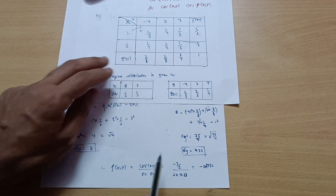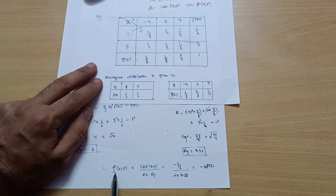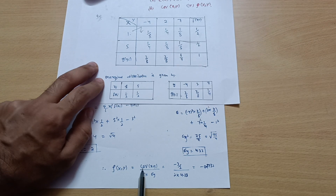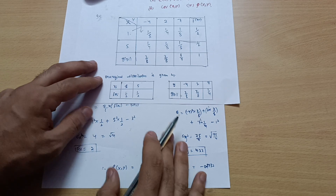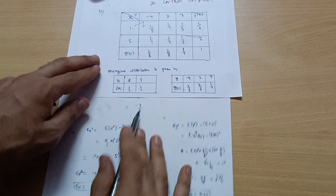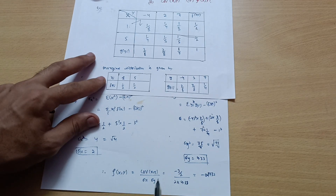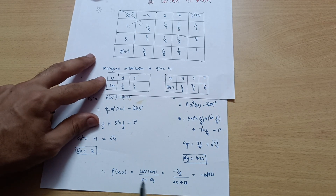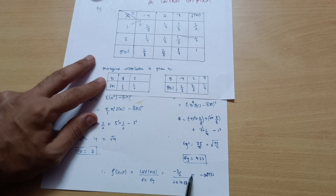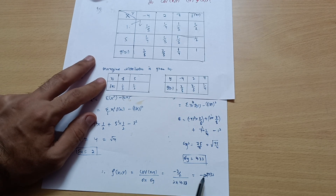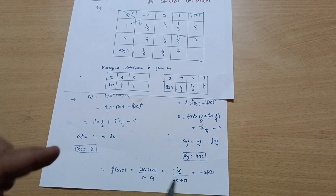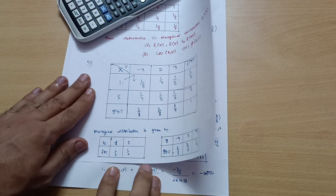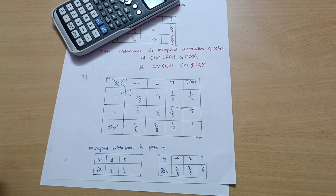The correlation formula is: Corr(X,Y) = Cov(X,Y) / (σ(X) · σ(Y)). So it is (−3/2) / (2 × 4.33) = −0.1732. This is the answer for this question. I hope this is clear. Please share this video with all your friends. Thank you.